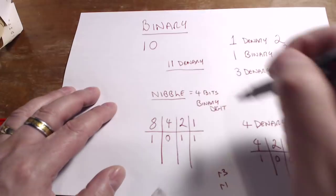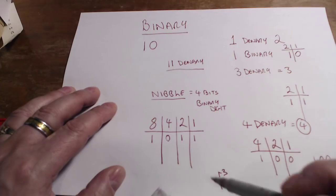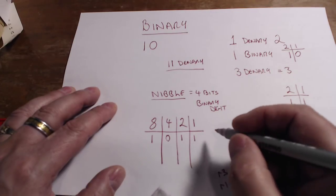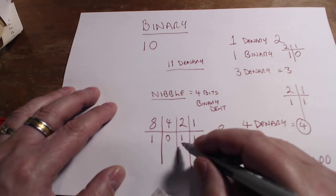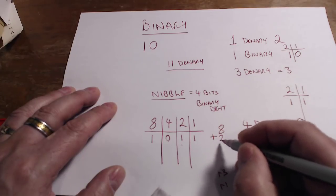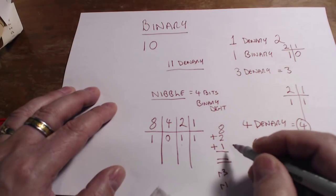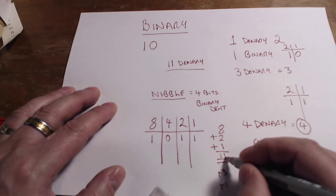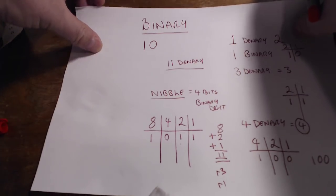Denary is actually one zero one one in binary. And I can check this. I can say, well, I've got eight plus two plus one. So I'll just do some adding up: eight and two is ten, and one is eleven.